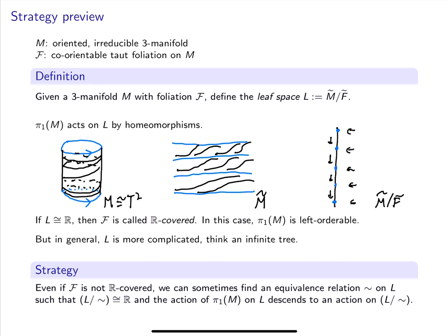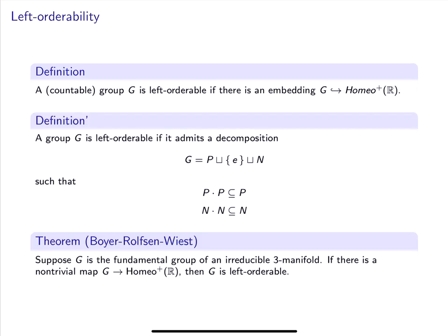Let's take a step back now and go through some basic definitions. Here are two definitions of left orderability. First, a group is left orderable if it can be decomposed into three sets, P for positive, a singleton containing the identity, and N for negative. And we ask that positive times positive is positive, and negative times negative is negative. There's no constraint on positive times negative.